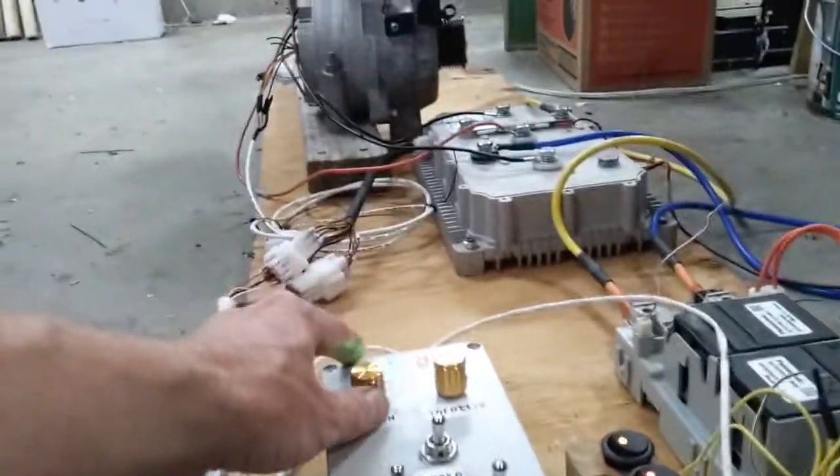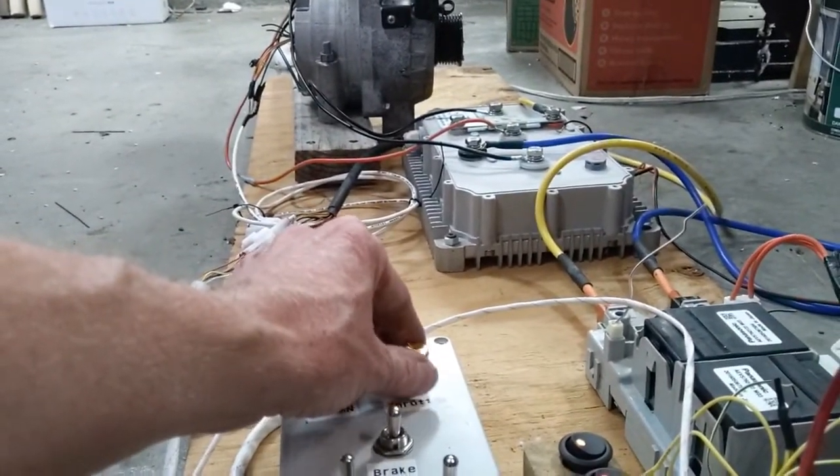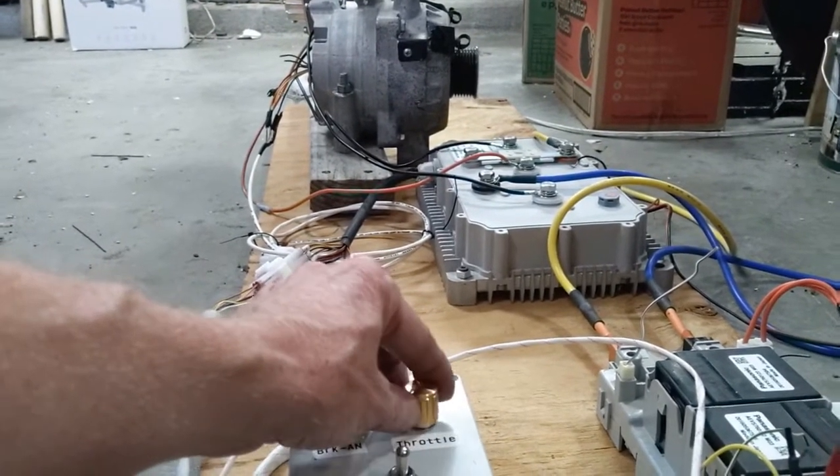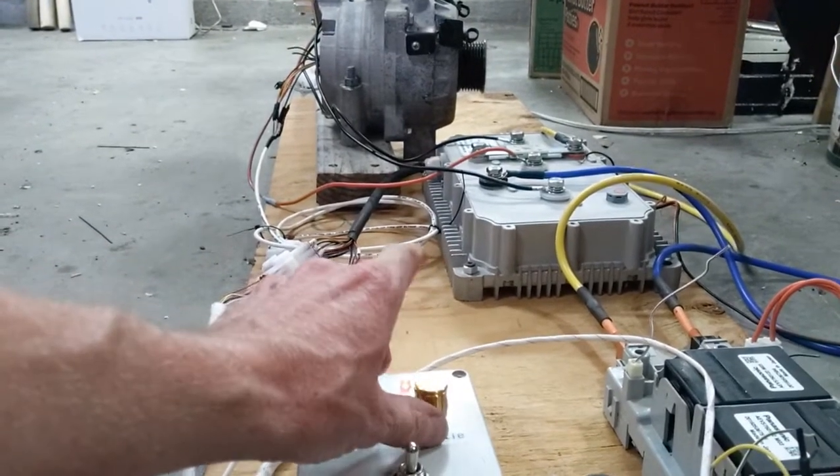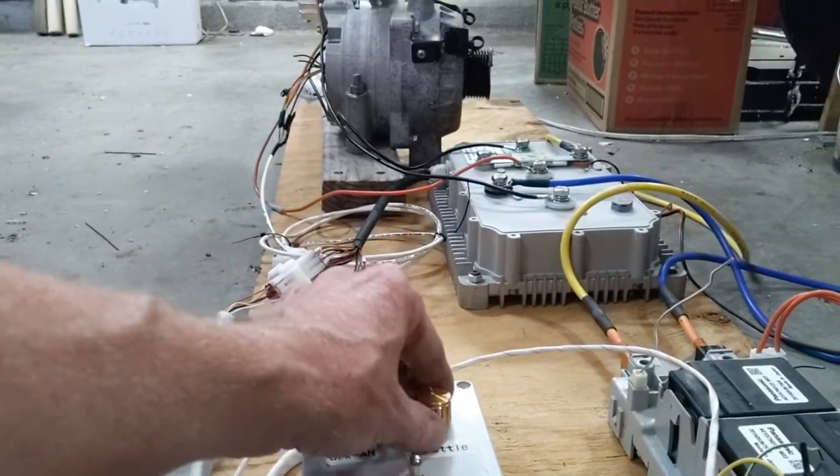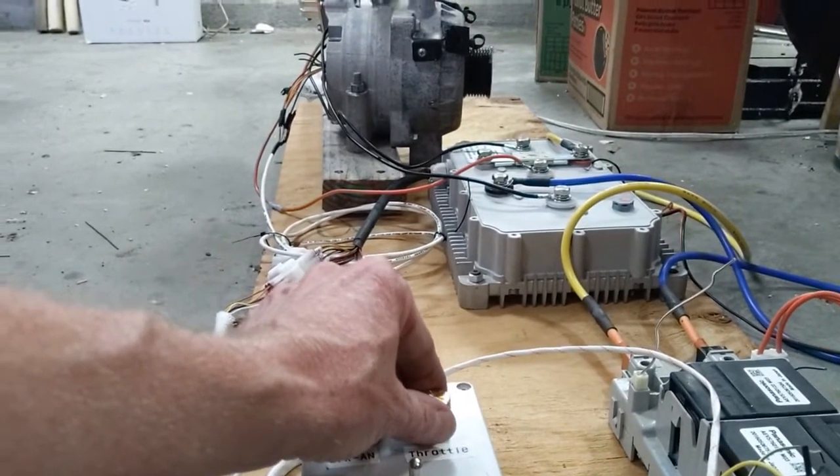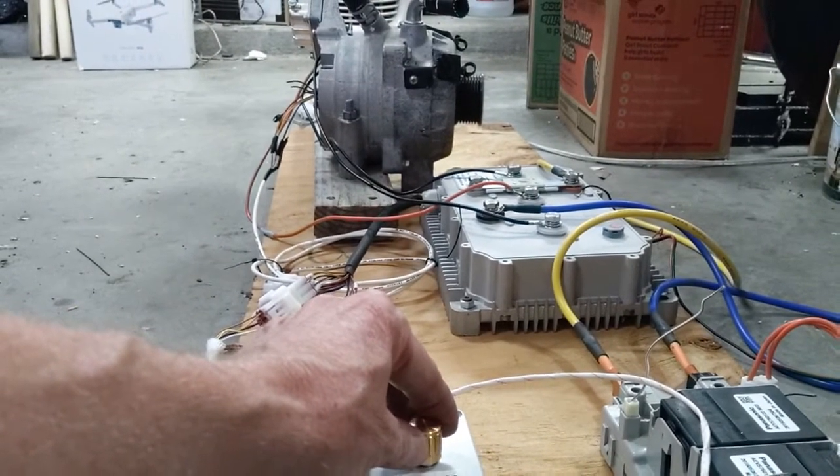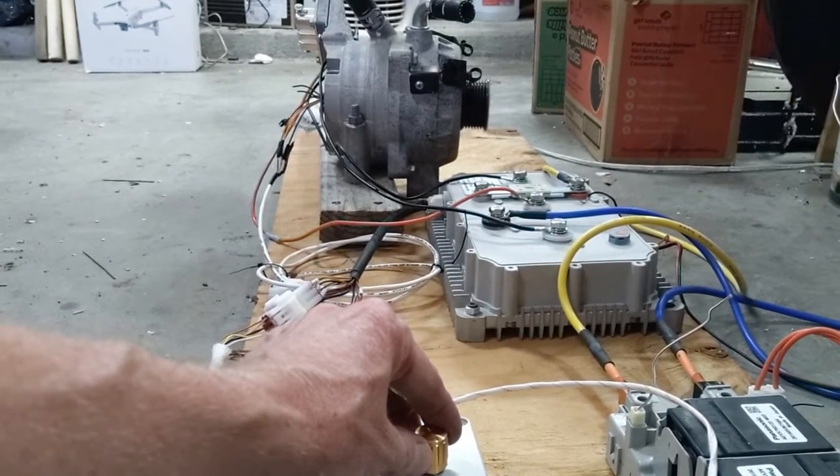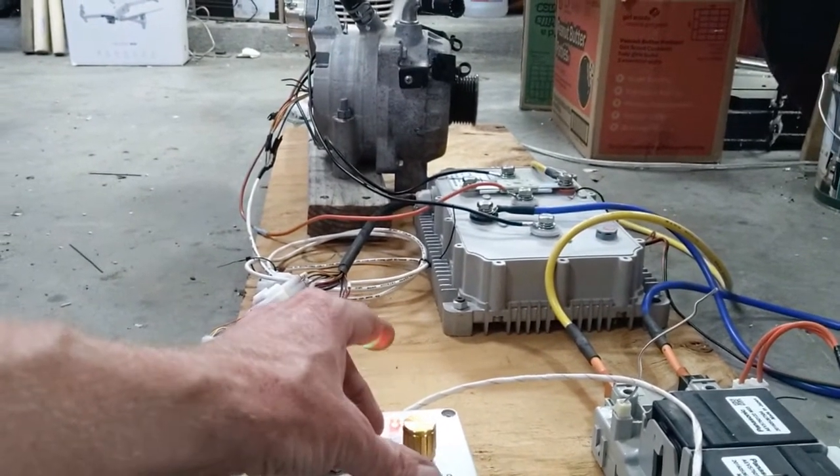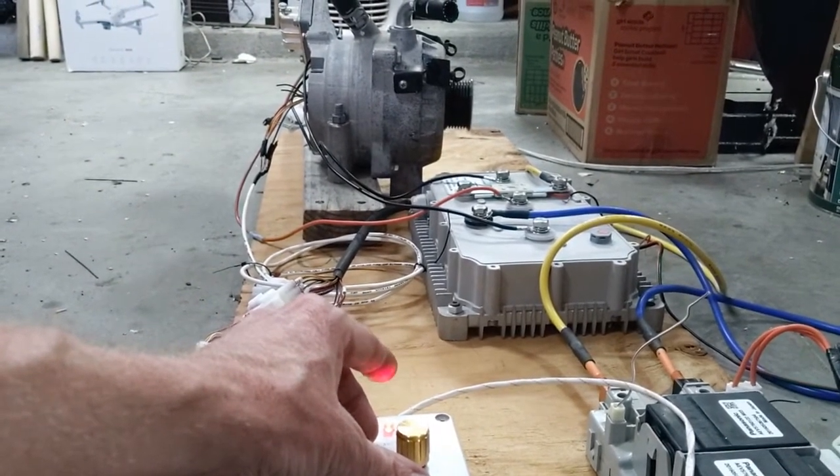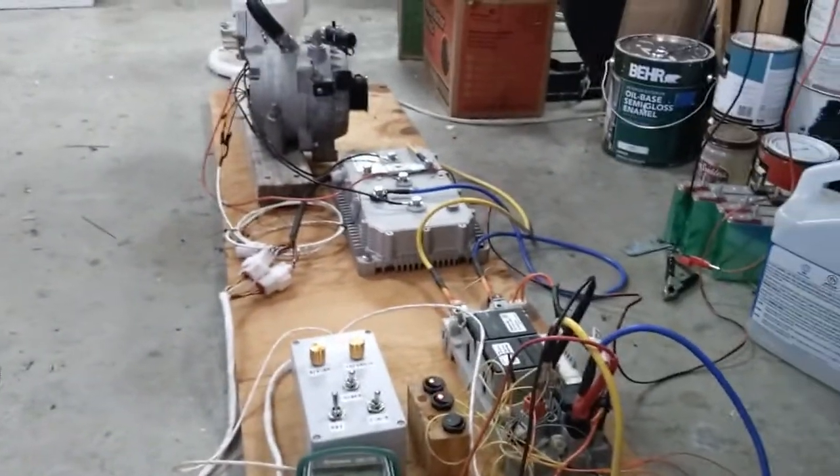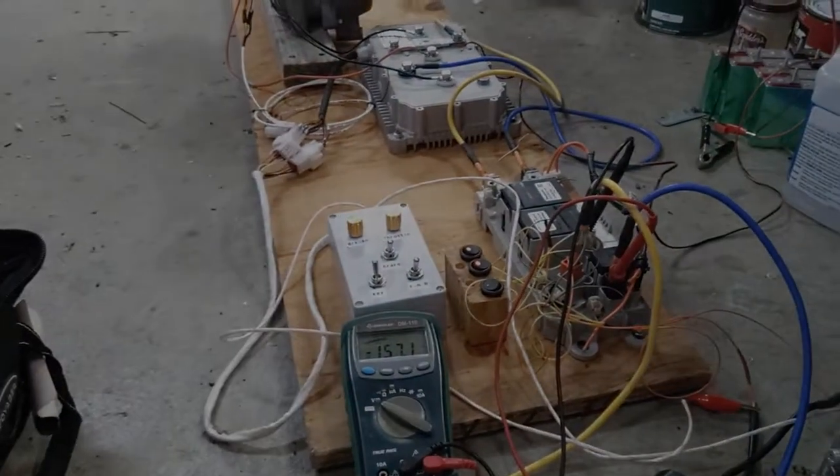So let's see if I can get, yeah, here we go. I don't know why it had that rev up, rev down, that was weird, but it may just be overshooting. Let's just roll it up slow. Yeah, that's a little weird, but it's spinning at 157 volts, awesome.